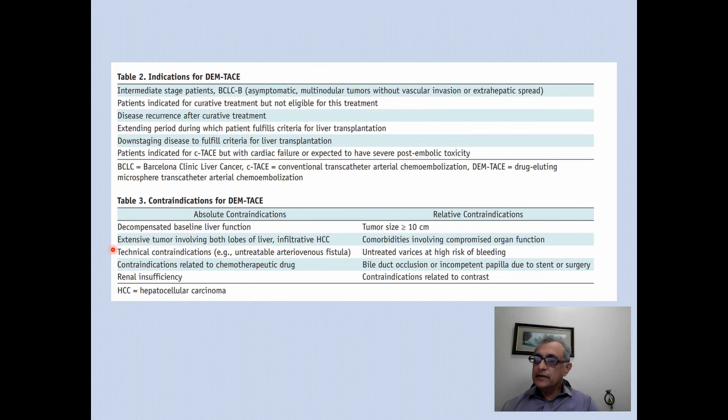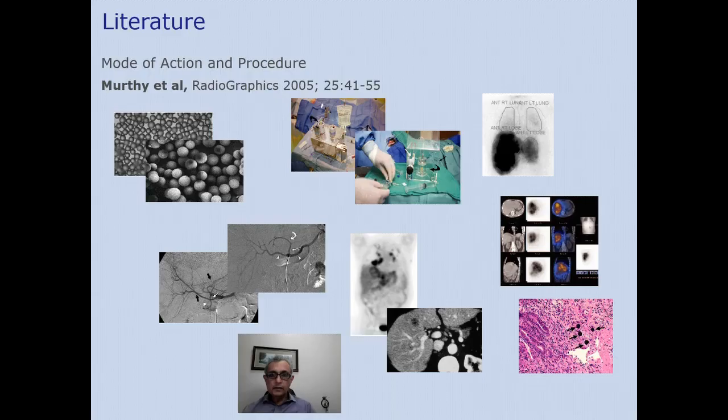Further contraindications include contraindications to the chemotherapeutic drug or renal insufficiency. Relative contraindications include tumor size over 10 centimeters — which can be overcome by partial treatments over extended periods — comorbidities involving compromised organ function, untreated varices at high risk of bleeding, and biliary obstruction or incompetent papilla, which increases risk of abscess or infection.